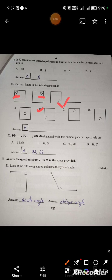Answer the following questions 21 to 28, 2 marks questions. Look at the following angles and name the type of angle. Right angle triangle, acute, obtuse angle. Right angle is exact 90 degrees. Obtuse is more than 90 to 180 degrees.